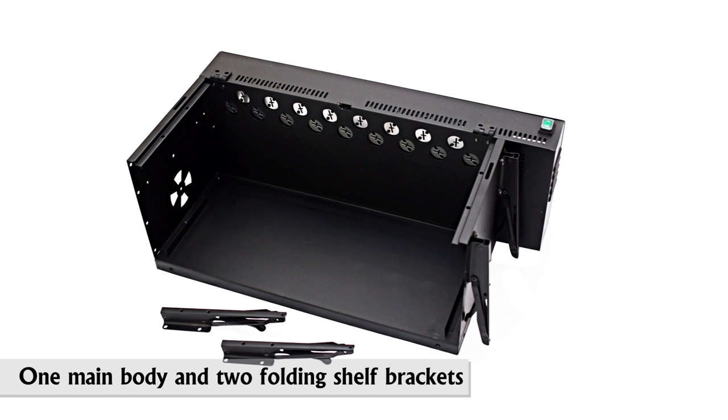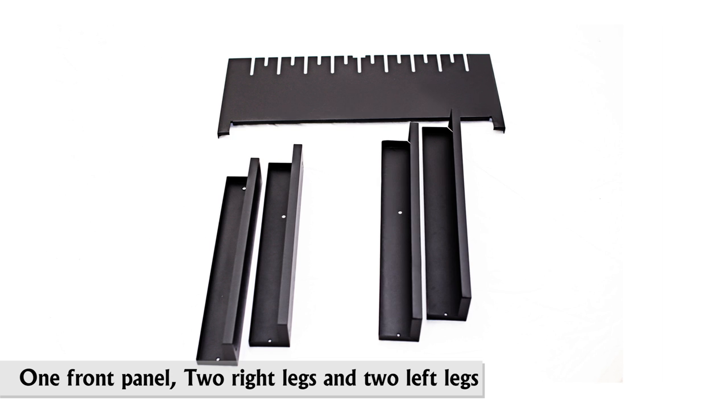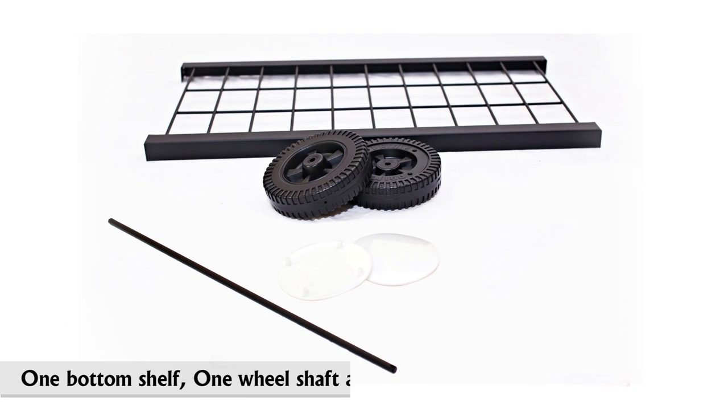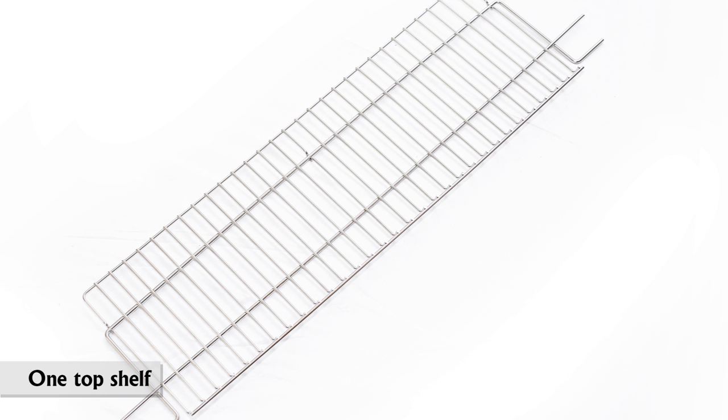One main body and two folding shelf brackets, one front panel, two right legs and two left legs, one bottom shelf, one wheel shaft and two wheels, two cotter pins, two main lid hangers, and one top shelf.